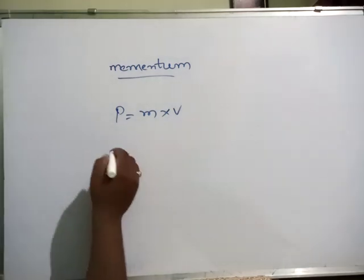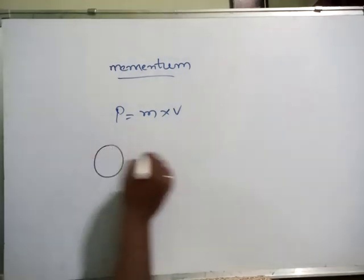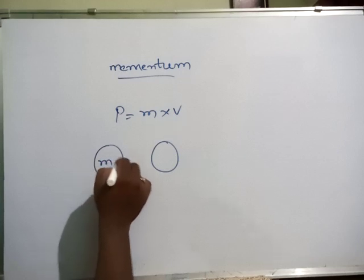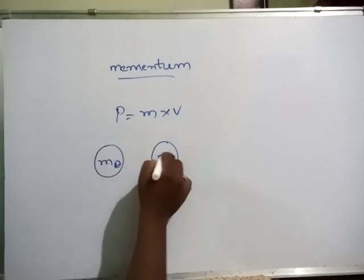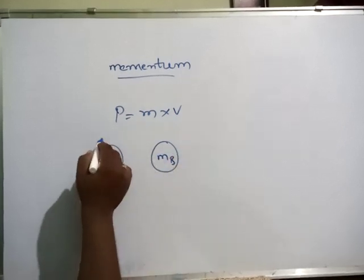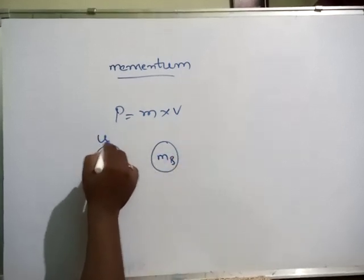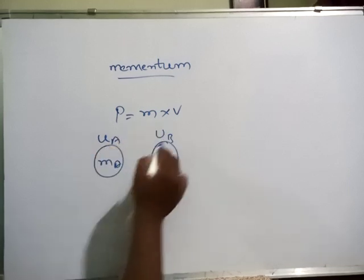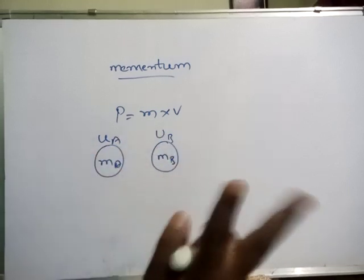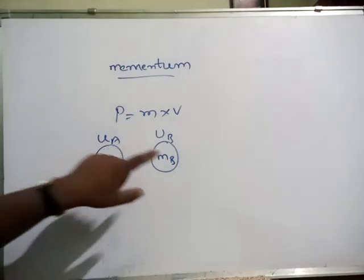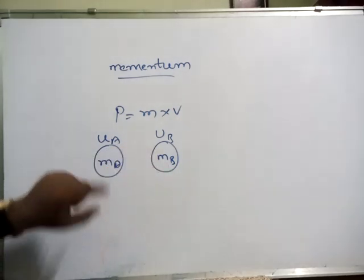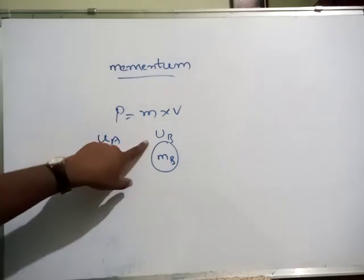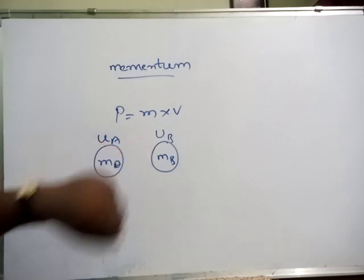If you take two balls, mass MA and mass MB, the initial velocity of A is UA and the initial velocity of B is UB. Here A and B are two balls with masses MA and MB and initial velocities UA and UB.